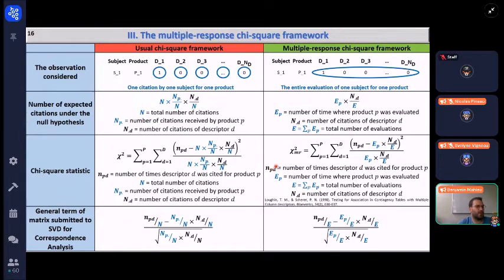And here are the chi-square statistics in the two frameworks. As you can see, when you change the number of citations with the number of evaluations, they are the same, except that you have to replace at each time citations by evaluation. And this is the same for the general term of the matrix submitted to singular value decomposition to perform the correspondence analysis.